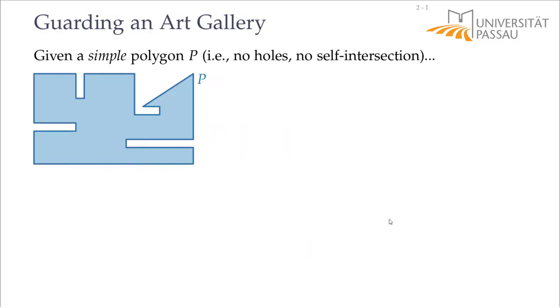We will start with the art gallery problem. In the art gallery problem you want to guard your art gallery. You have some pieces of art standing around, but there are many burglars in town and they always try to steal your art pieces. If there is only one piece that you cannot see at some point, they will immediately steal it. So you want to place some cameras and you want to make sure that every single piece of your art gallery is seen by these cameras.